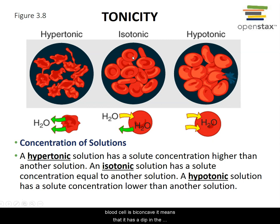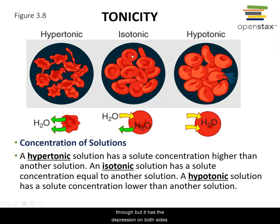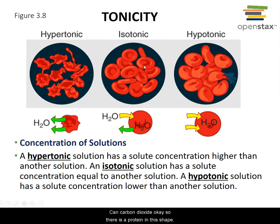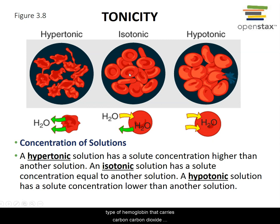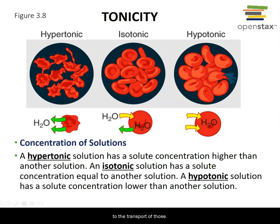Red blood cells are biconcave — they have a dip in the middle, rounded at the ends, with a depression on both sides, somewhat like a donut without the hole punched all the way through. This shape gives the red blood cell its ability to carry oxygen and carbon dioxide. The protein hemoglobin — oxyhemoglobin for oxygen and another form for carbon dioxide — depends on this shape for proper function.